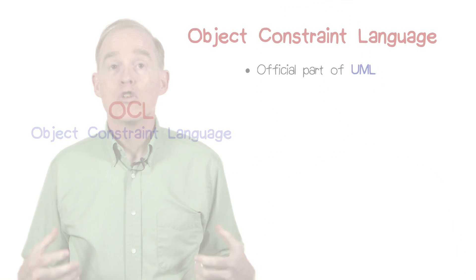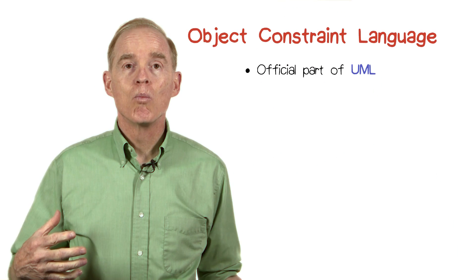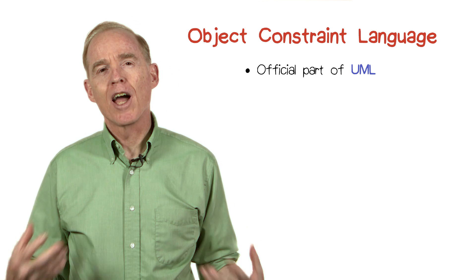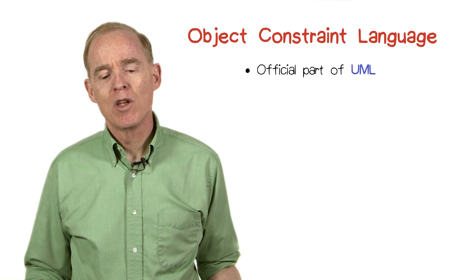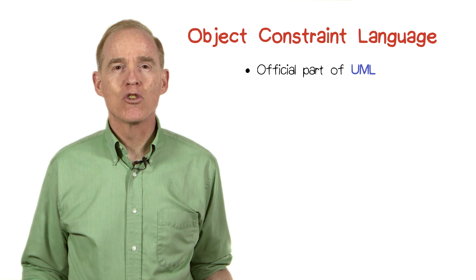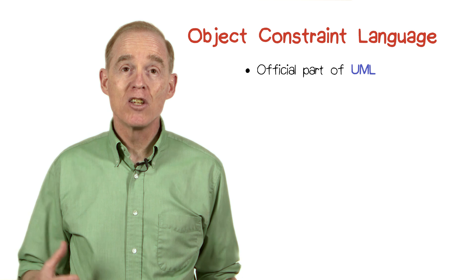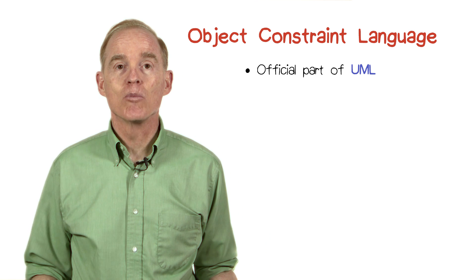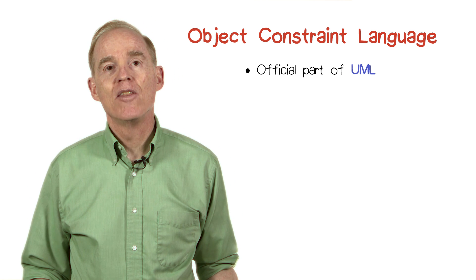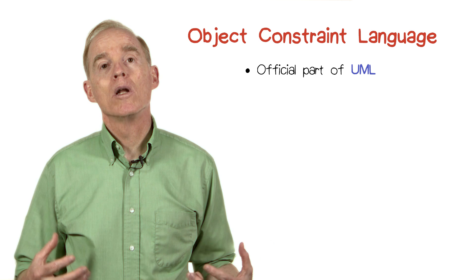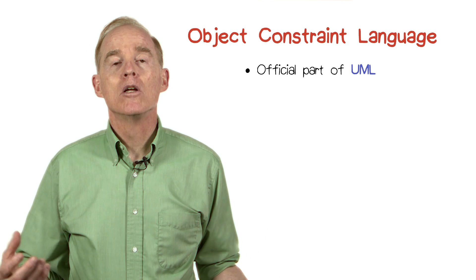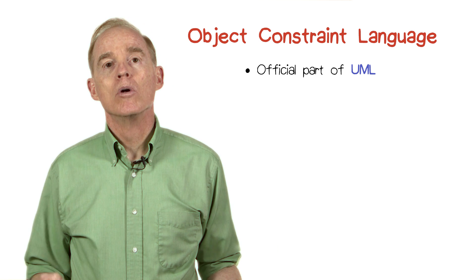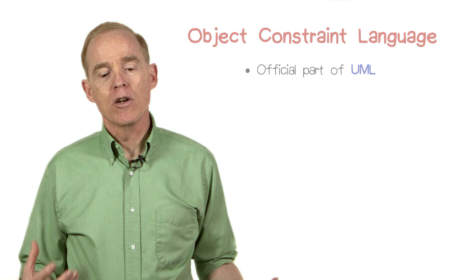The topic today is the Object Constraint Language, a part of UML. So far, when we've looked at UML, we've been looking at diagrams. But diagrams don't tell the whole story. There are places in the specifications and the designs of your systems where you need more details, and that is what OCL was designed to provide to designers.